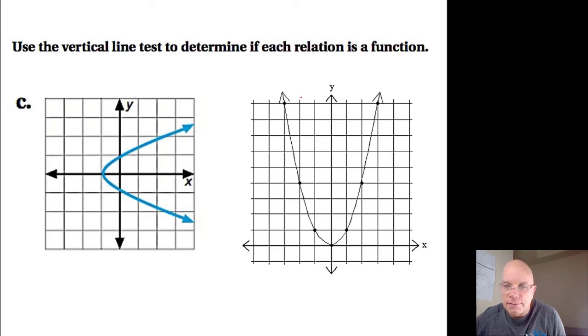If I draw a vertical line here, I'm only intersecting at this point. If I draw a vertical line here, I'm only intersecting at this point. No matter where I draw a vertical line, I'm only intersecting one point. So this is a parabola and it is a function. For any given x value, for any input, there's a specific one and only one output value.